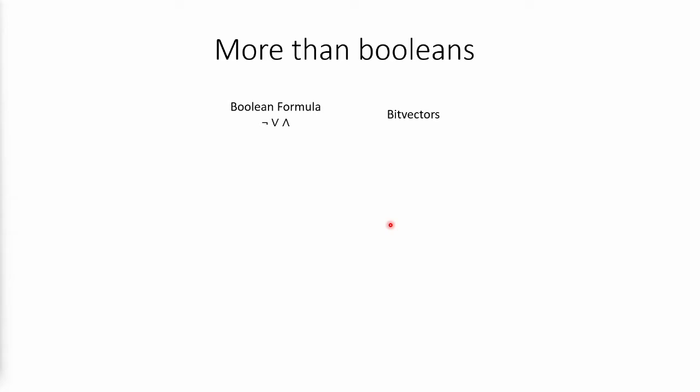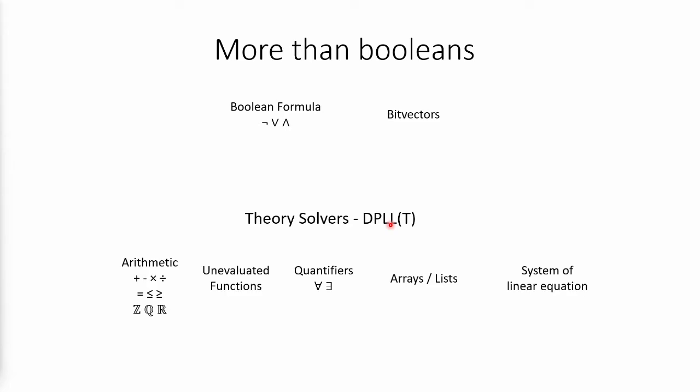But that of course is going to be very slow because say we have two integers that's already 64 bits and 64 variables will be a ton of work. So we want to have some way to reason about specific domains of problems.